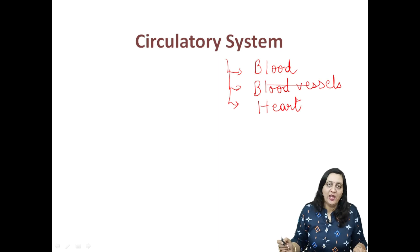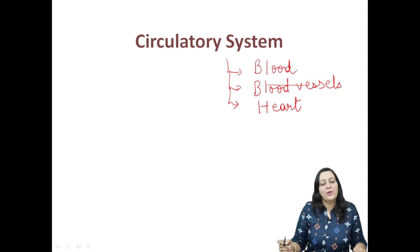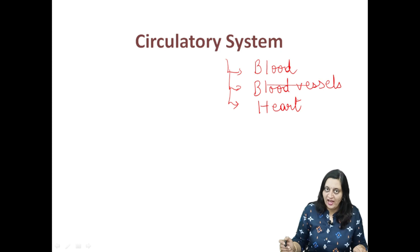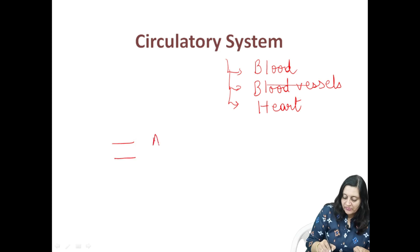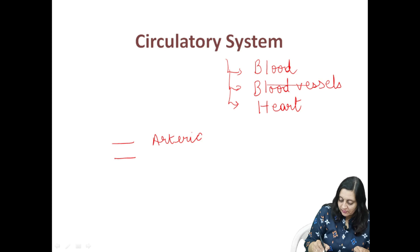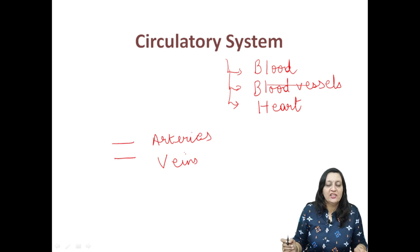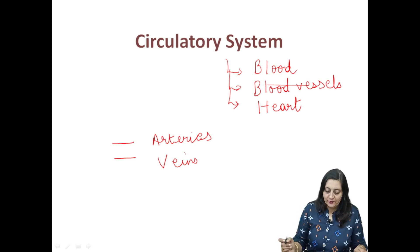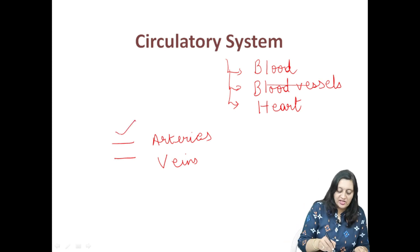Blood vessels are tube-like structures which form a network within our body. Through these tube-like structures, blood flows, which is the carrier of substances. Blood vessels can be of two types: arteries and veins. Arteries are the blood vessels which take blood away from the heart, while veins are the blood vessels which bring blood to the heart.